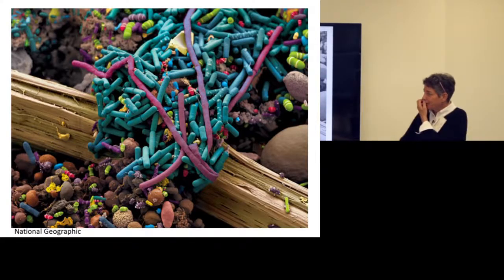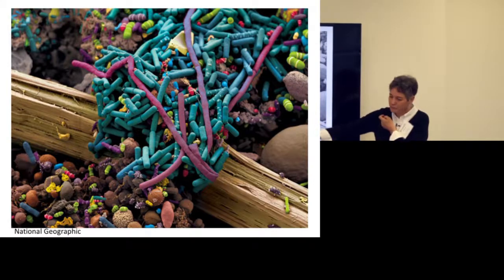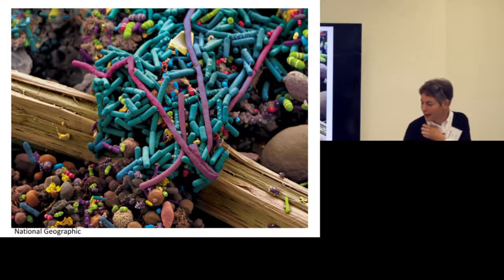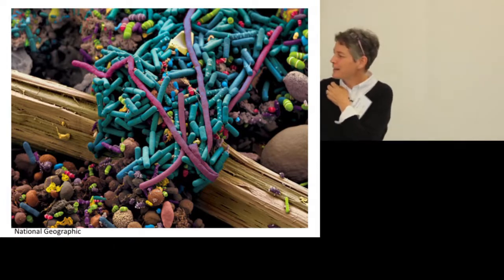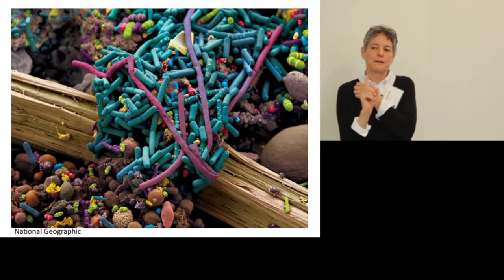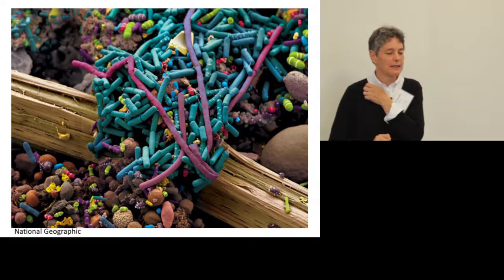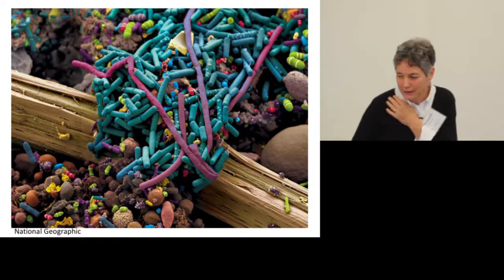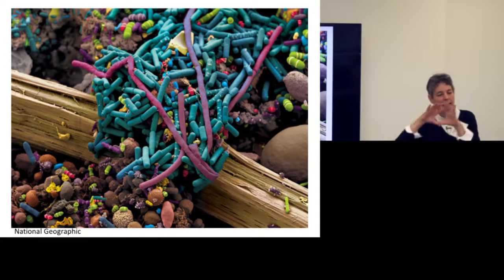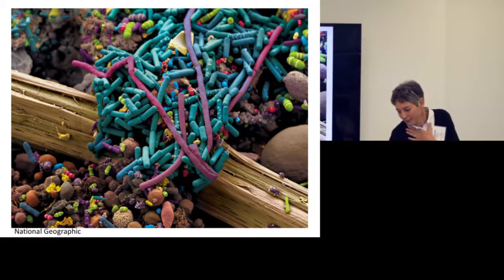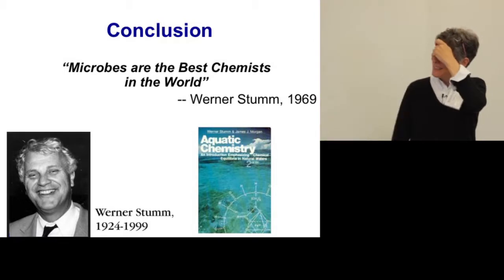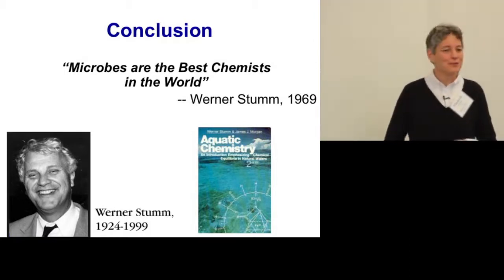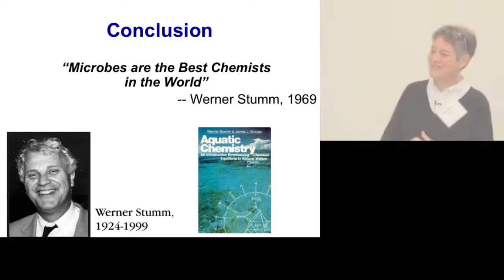This is a picture of microbes attacking a piece of wood. If you apply genomics, you can identify which organism is doing which job. The point is that it's usually not one microbe — it's usually a consortium of microbes that works together to do these things, so we need to look at them as a team of organisms. To conclude with a quote from Werner Stumm, an aqueous chemist who was not at all a microbiologist, but who very presciently stated: 'Microbes are the best chemists in the world.' Maybe we can learn from them. I'll now pass it over to Leslie.